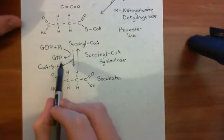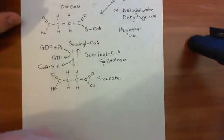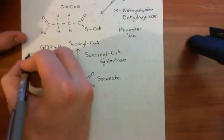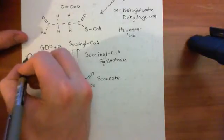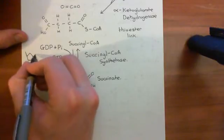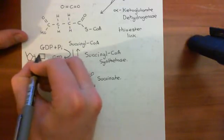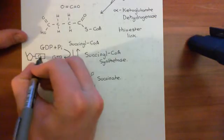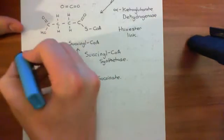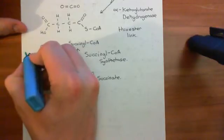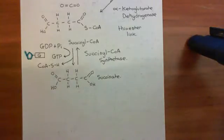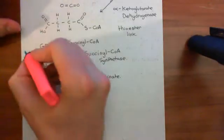Guanosine triphosphate is very similar to adenosine triphosphate — it's just got a different organic base. If we just draw a little cartoon of the structure of guanosine triphosphate, basically you have a ribose sugar bound to guanine, the organic base. Guanosine is the name for guanine bound to ribose, just as adenosine is the name for adenine bound to ribose.